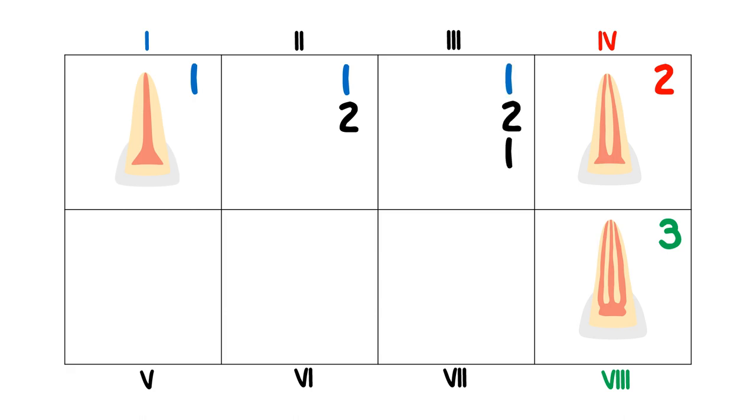Type 2, as the number 1,2 suggests, will be 1 canal giving rise to 2 canals as we travel from the apex to the pulp chamber. Type 3, following a similar pattern, is 1 canal that arises from the apex and during its course splits off into 2 and unites into 1 before it joins into the pulp chamber.